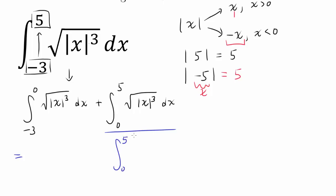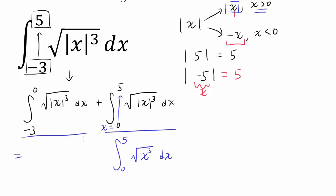For the integral from 0 to 5, when x is going from 0 to 5, x is greater than 0, so absolute value of x simply becomes x. Therefore, we can write square root of x cubed dx instead of square root of the absolute value of x cubed dx.